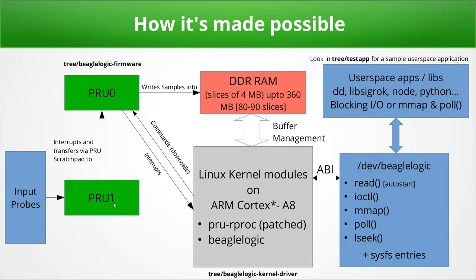PRU1 is responsible for sampling the input probes, then transmits those bytes to PRU0 using the xout instruction. PRU0 then writes those sample bytes directly into system memory without intervention from the Cortex-A8 core. Two kernel modules running on the Cortex-A8 are responsible for communicating with the PRUs and managing the buffer. Since large contiguous buffers are difficult to obtain, the BeagleLogic module divides a large buffer into chunks of 4MB each and passes the physical addresses of each 4MB chunk into PRU0. PRU0 fills those buffers and once it fills one, it sends an interrupt to the kernel module.